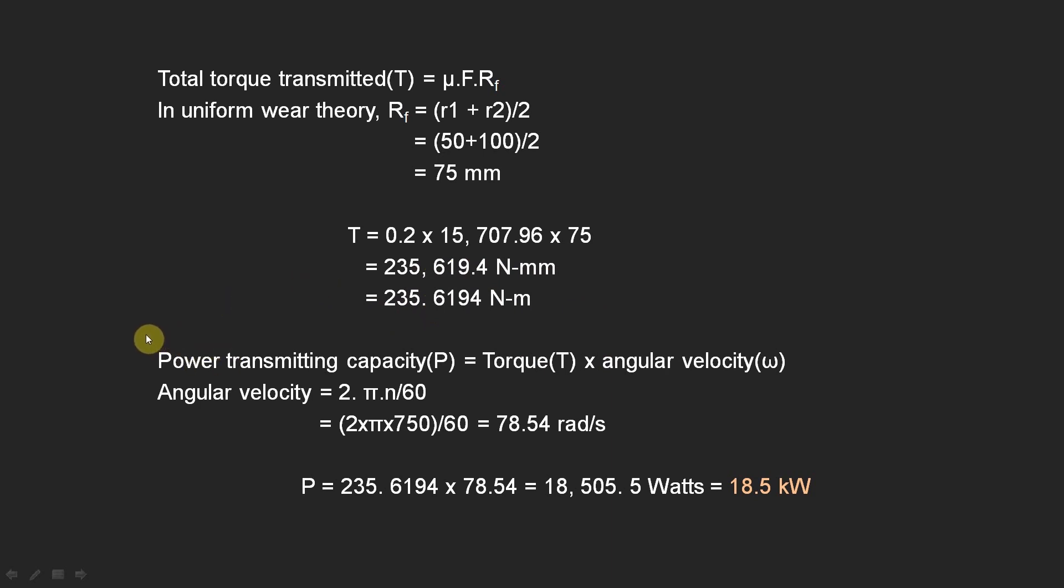Now, power transmitting capacity is torque × angular velocity. And angular velocity is 2πn/60. So you can substitute n value, which is 750 here, and we will get 78.54 radians per second.